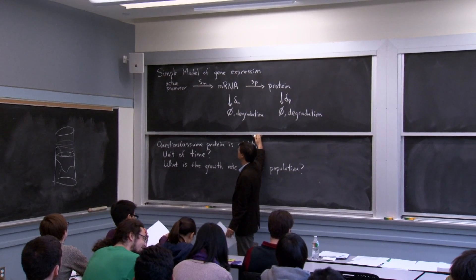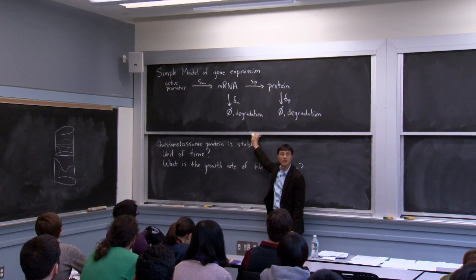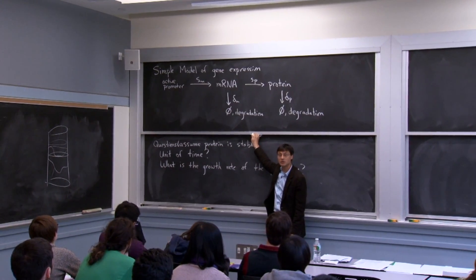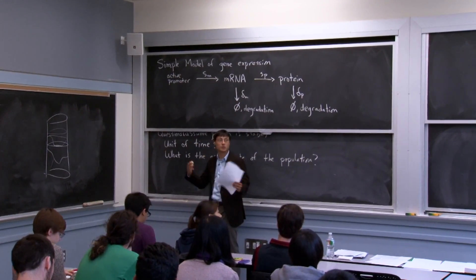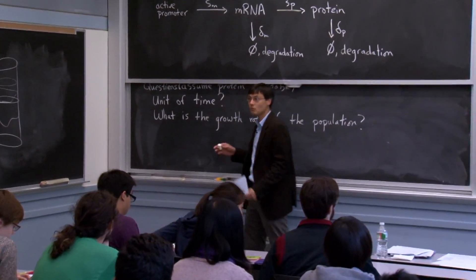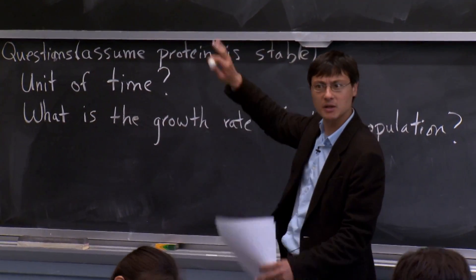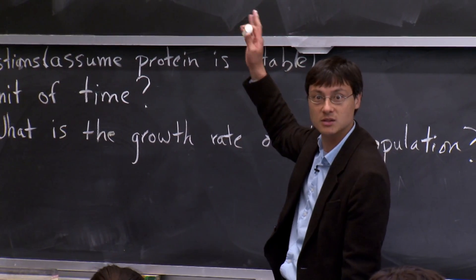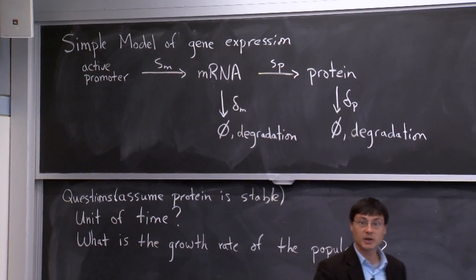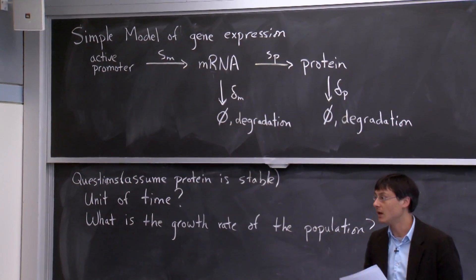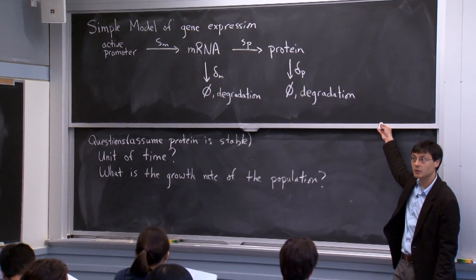This simple model of gene expression, as was indicated in the review, is perhaps a reasonable description of gene expression in bacteria when the gene is in some active state — so there's no repressor bound, for example. Although maybe even in the presence of a repressor, if it's binding and unbinding, you still end up getting some sort of renormalization that looks like this. But first order, this is a reasonable description of gene expression in bacteria, and it's the model that was basically used in the paper that we talked about on Tuesday.